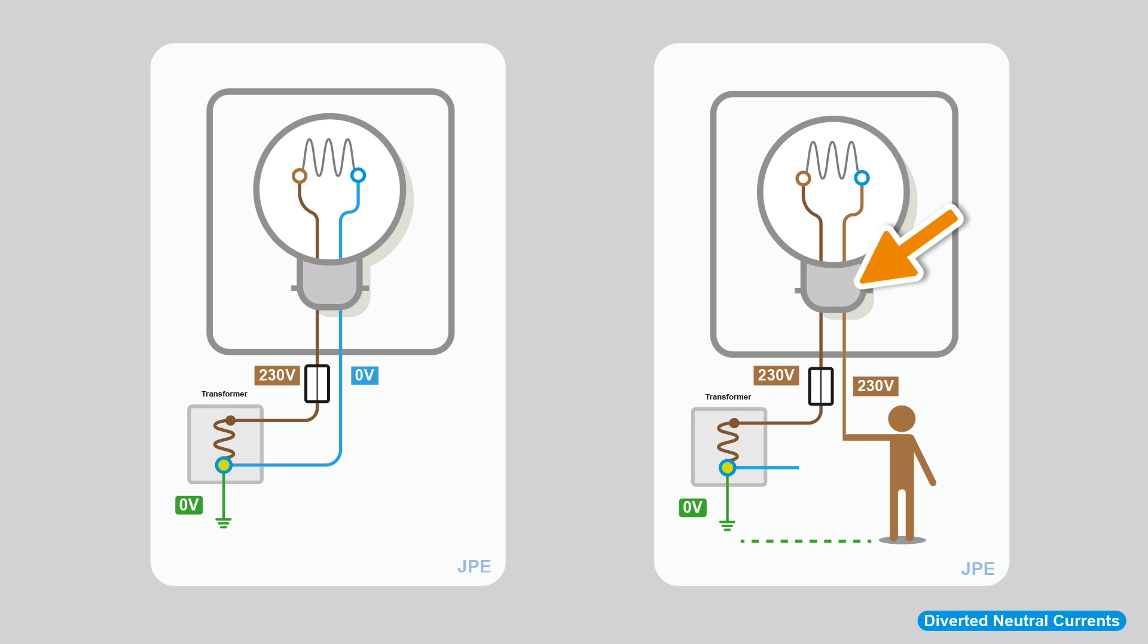We haven't got neutral anymore, but we still got this energized conductor. You'll have a standing voltage. The danger is if you touch that conductor, you then become the return path. The power will flow through you and try and find its way back to the transformer. That'll happen on any broken neutral. But the fact that we've got a combined earth neutral adds to the danger.